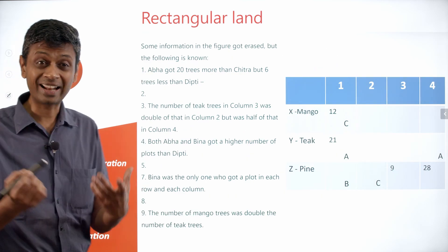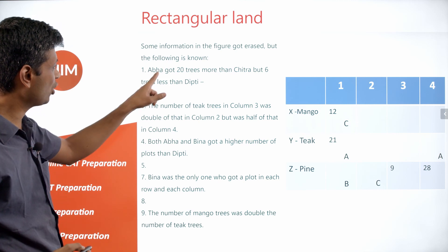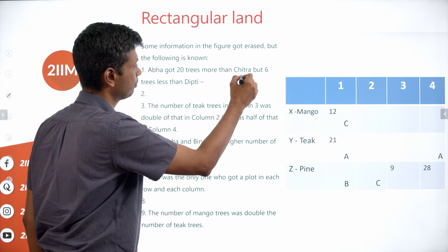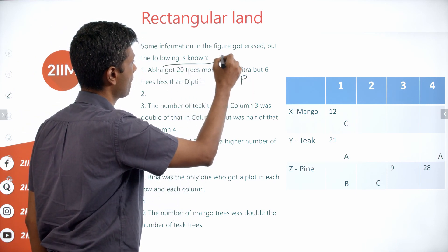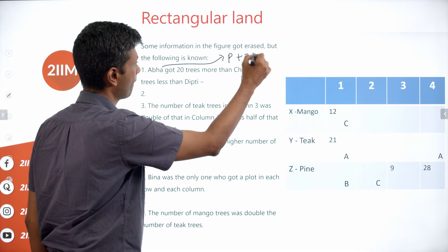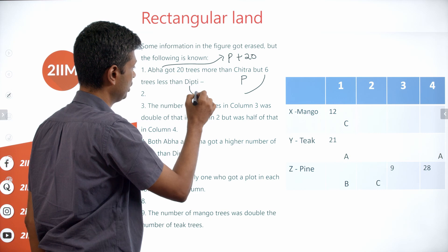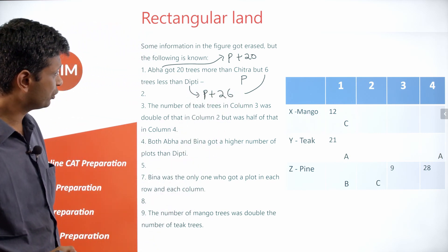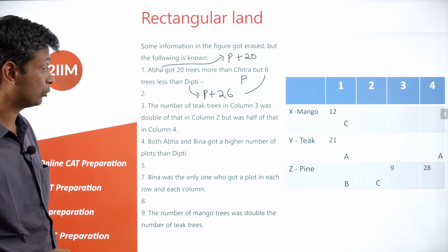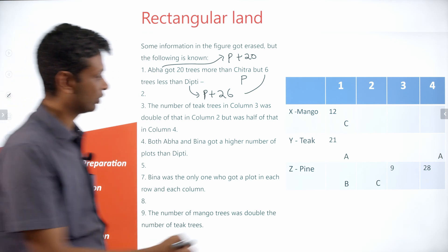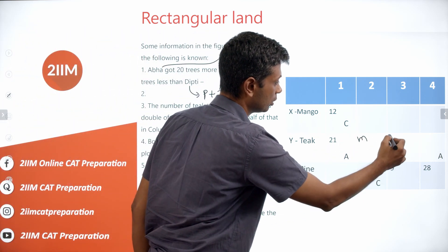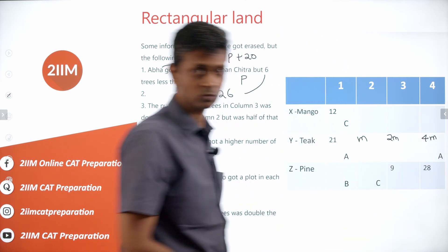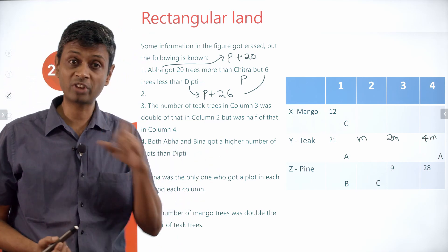So the constraints we like: Ava got 20 more than Chitra but six less than Deepti — Chitra gets P, Ava gets P plus 20, and Deepti gets P plus 26. For teak trees: column 2 is M, column 3 is 2M, column 4 is 4M. That's very useful — it captures three cells with the same variable M.